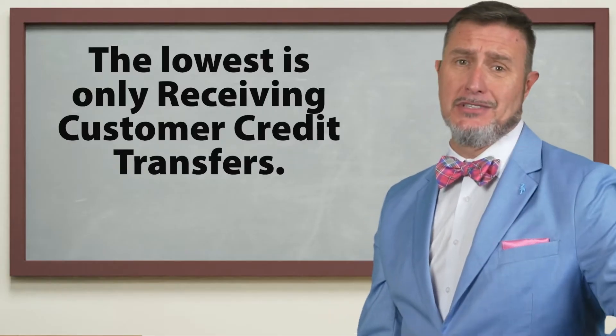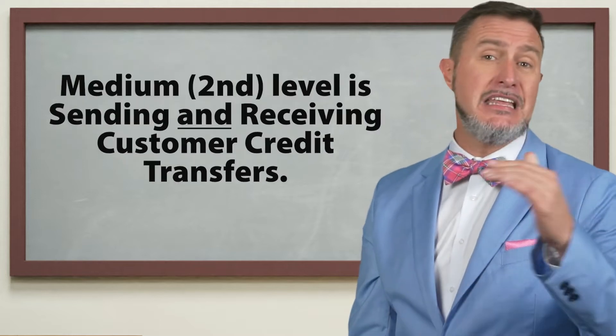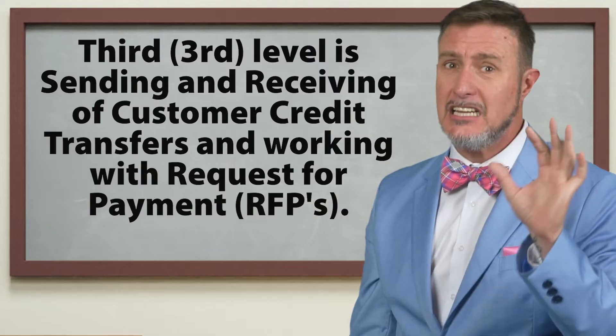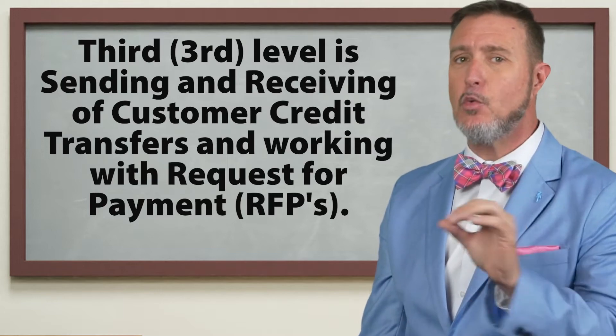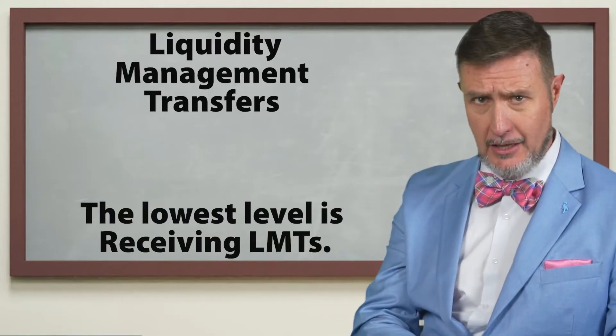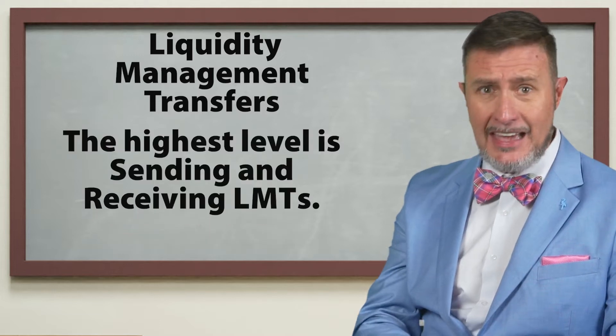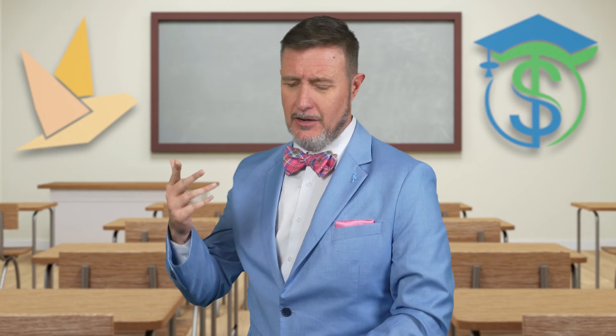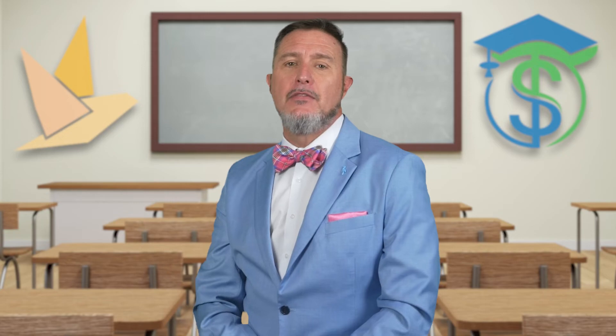For customer credit transfers, there are three levels of participation: the lowest is just receiving customer credit transfers; the median level is sending and receiving customer credit transfers; and the highest level, according to the FedNow Service operating procedures, is sending and receiving customer credit transfers plus working with Request for Payment (RFPs). For liquidity management transfers, there are two levels: the lowest is just receiving, and the highest is sending and receiving. If you're only supporting routing numbers with the settlement-only participation type, you can skip the certification — it's like getting a free pass.